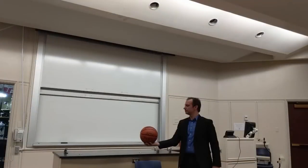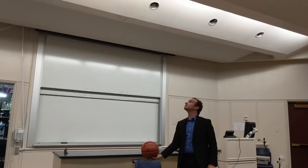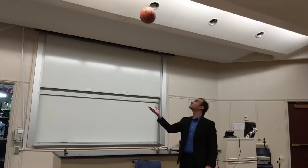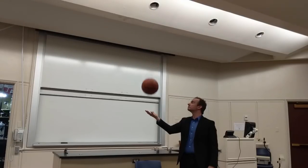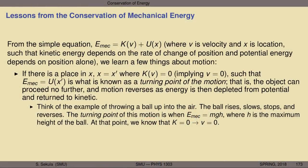Think of throwing a ball up into the air. The ball rises, it slows, its motion comes to a stop, and then the motion reverses. The turning point is when the mechanical energy equals mgh, where h is the maximum height of the ball of mass m. At that point, kinetic energy is exactly zero, and so the speed is exactly zero.